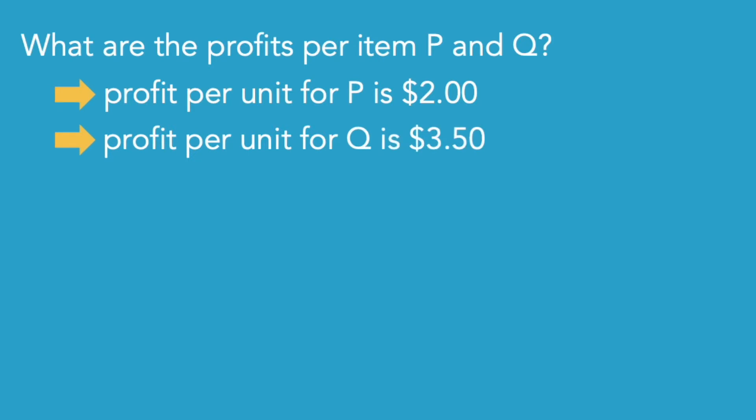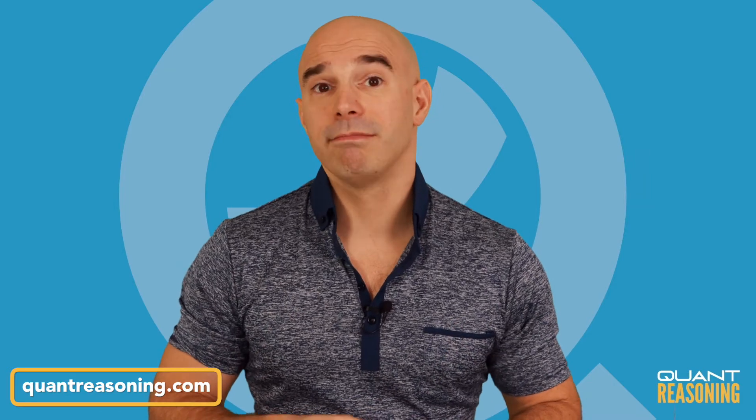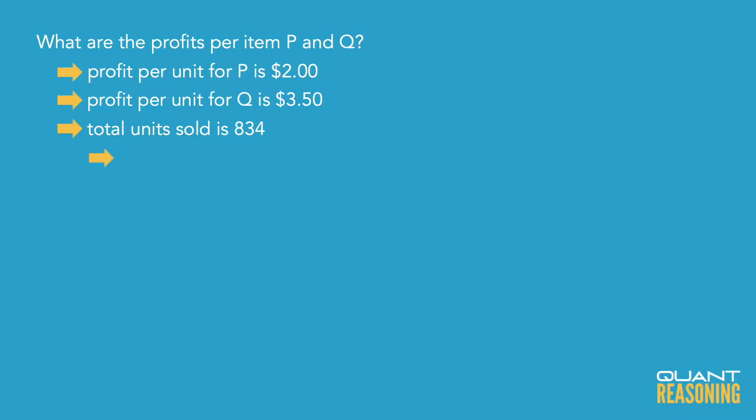The total number of units sold is given — it's 834. An executive would wonder: how much profit can I expect without knowing the mix of P and Q? In the worst case scenario all 834 units came from P, so that's two dollars times 834, which is around 1700. In the best case scenario all 834 units came from Q, so 834 times three and a half — let's call it just under 2900.